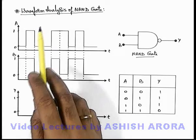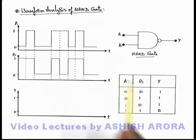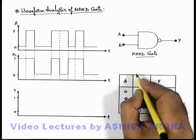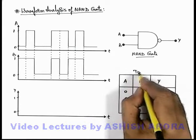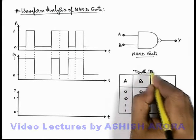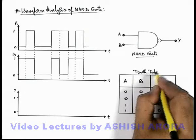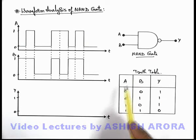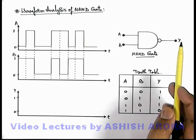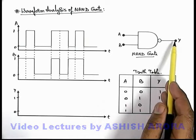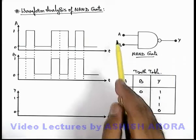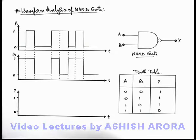Let us now discuss the waveform analysis of a NAND gate. We have just seen the truth table of the NAND gate in the previous section, which we have drawn over here. Based on the truth table, we are going to analyze the output waveform at the output terminal Y of this NAND gate, corresponding to these two input terminals.